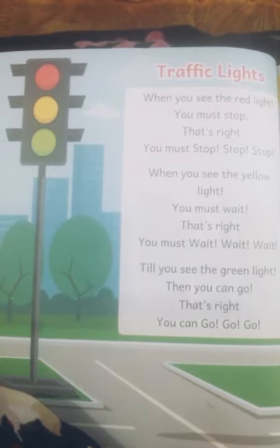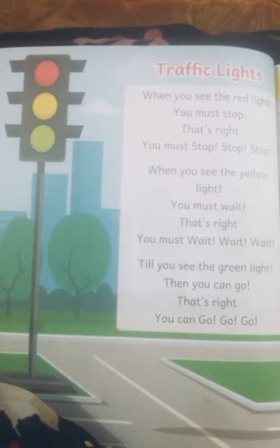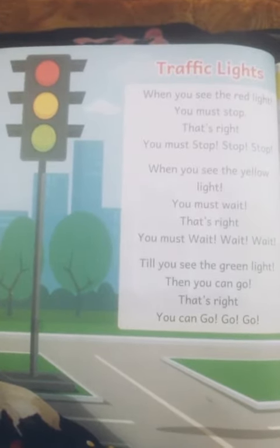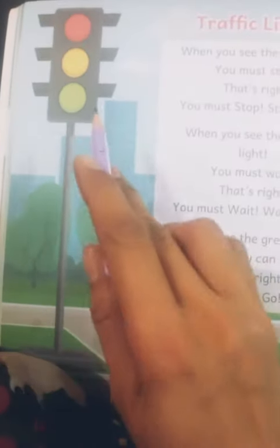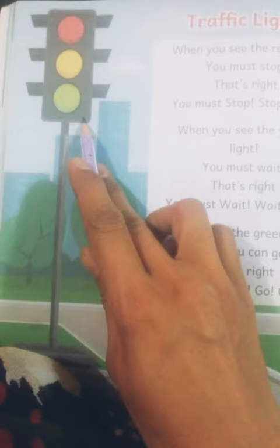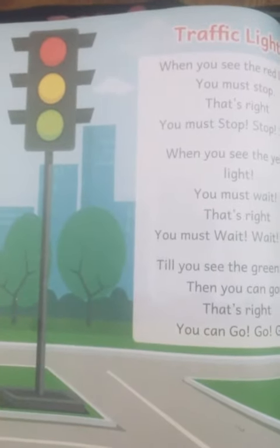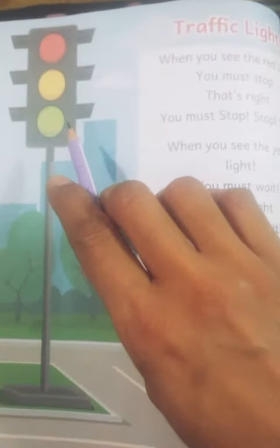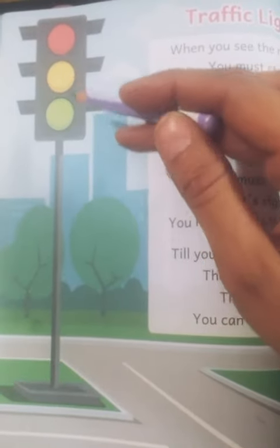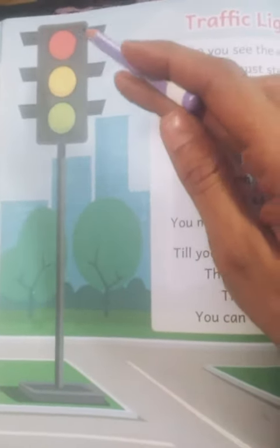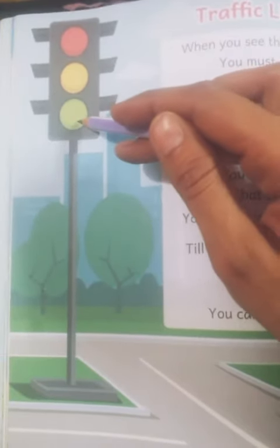Have you ever seen the Traffic Lights? Aapne Traffic Lights dekhi hai? When you go outside from your home with your parents, you can see the Traffic Light at the square. Jab aap apne parents ki saath ghar se baahar jate hai, tab aap is Traffic Light ko churahai par dekh sakte hai. This Traffic Light has three different color lights: Red Light, Yellow Light, and Green Light.